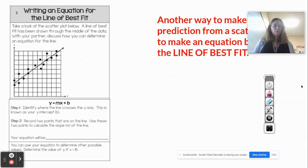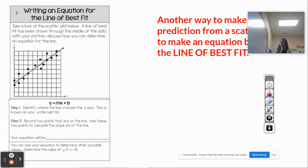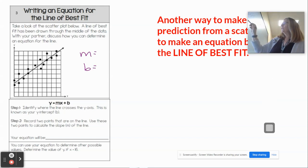You can also use the line of best fit to make an equation. So we have y equals mx plus b, which we've done before. And to make an equation, here's our line of best fit. So here, 0, 1, 2, my y-intercept would be 3.